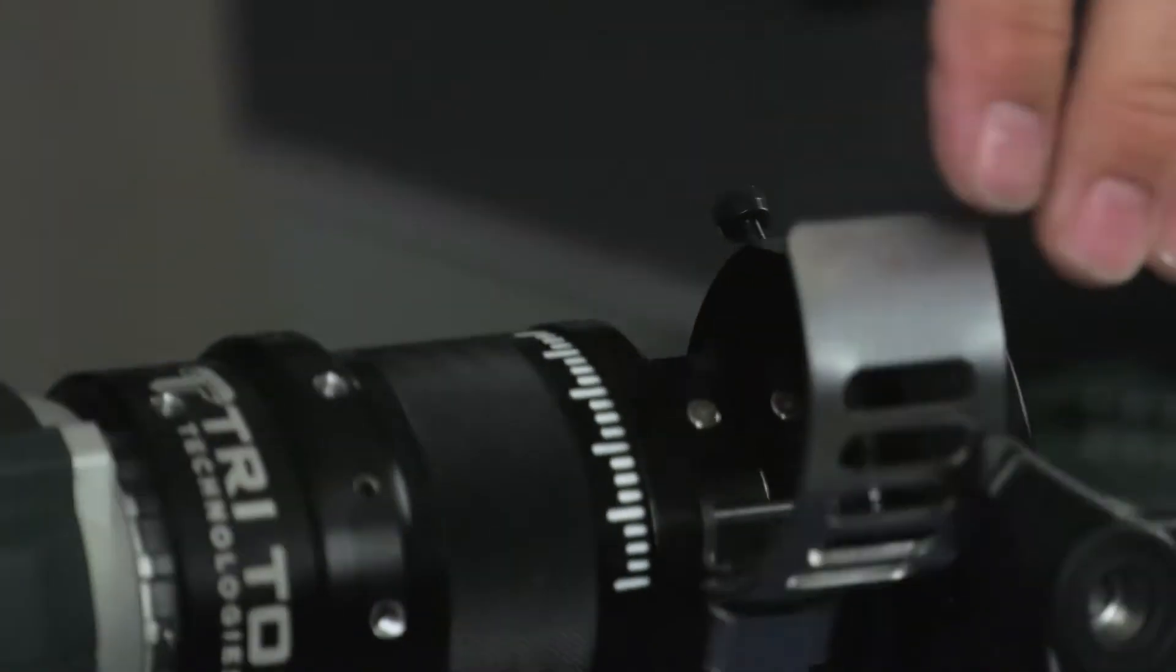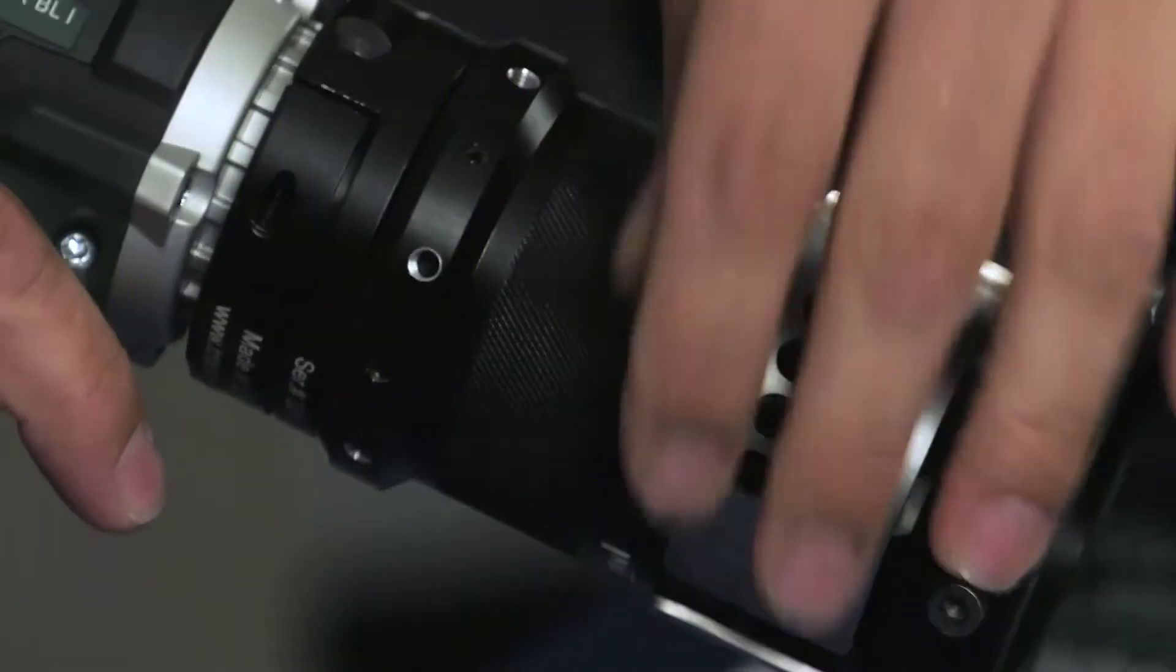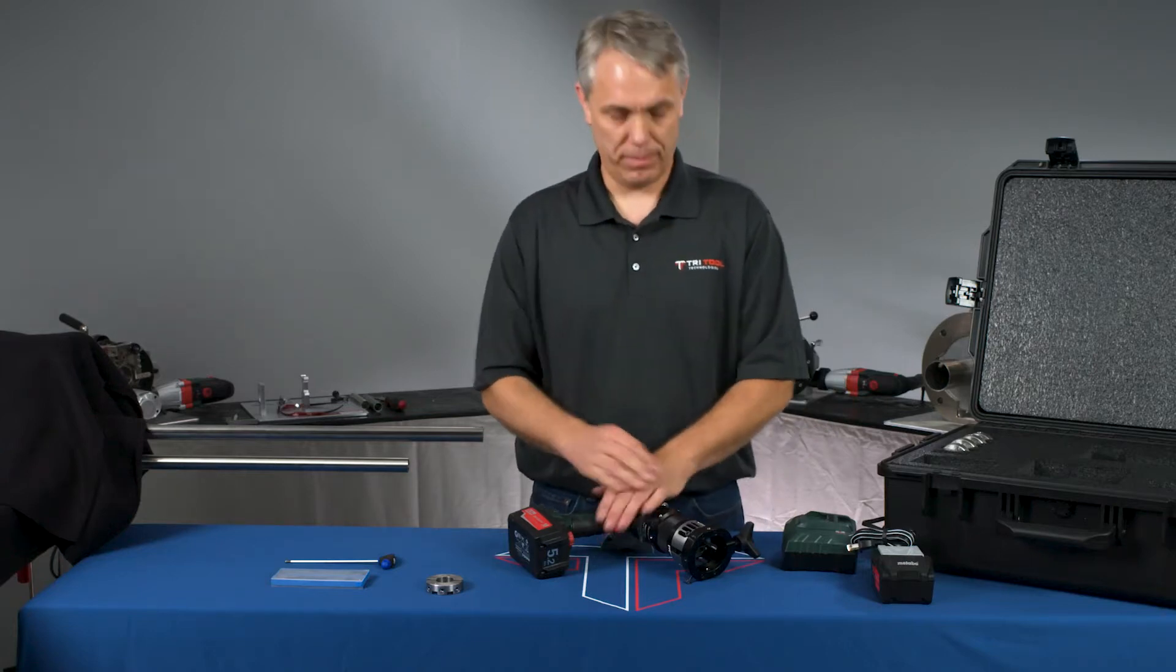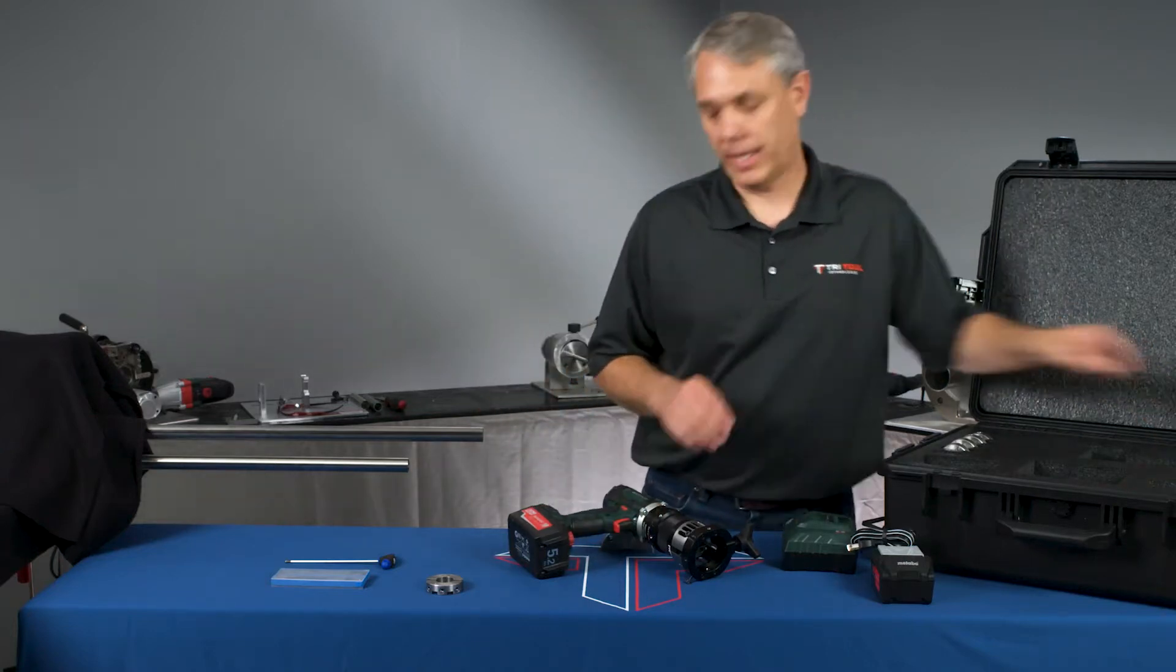You can access the cutting head from either side. It's a compact, lightweight machine that can get in very tight spaces.